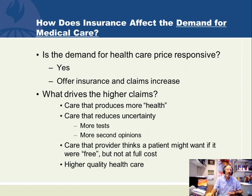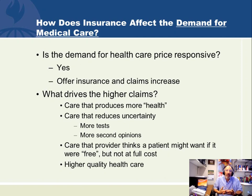In American health economics, we are very aware that being insured absolutely affects the demand for medical care. The choices we make to seek care and how much that care will cost us depends heavily on whether or not we are insured. So the demand for health care is definitely price responsive, and because it is, if we offer insurance, claims will increase. There are two pieces of what drives higher claims once people are insured: claims for products and services that make us healthier, and claims for products and services that reduce uncertainty — getting more tests or second opinions, but not necessarily creating health.